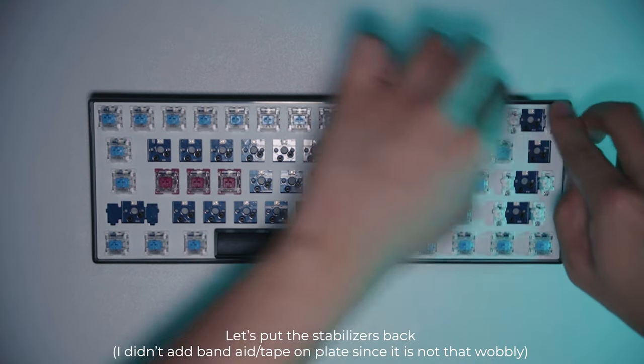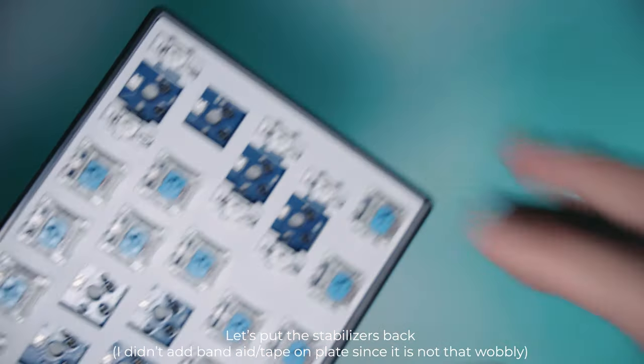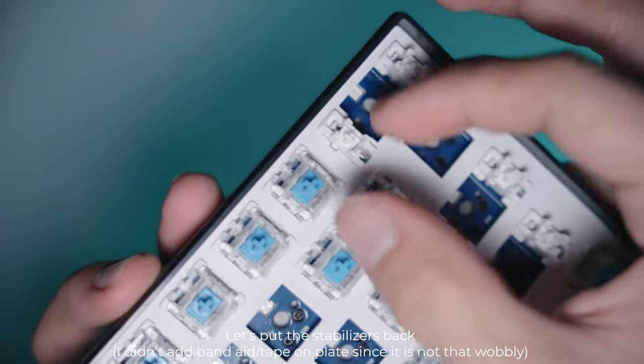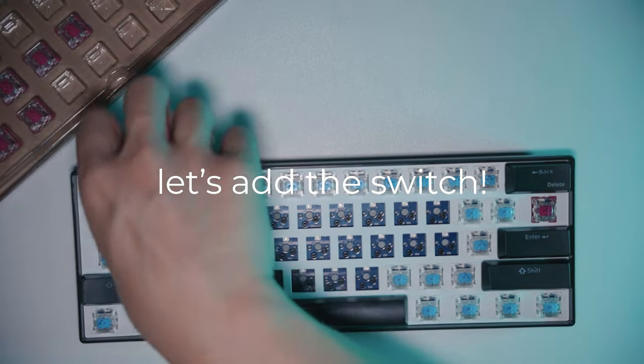Since we are done with the stabilizers, the last part of the mod is changing the switches. For this one, I'm going to use the lubed wine red switches from Akko.